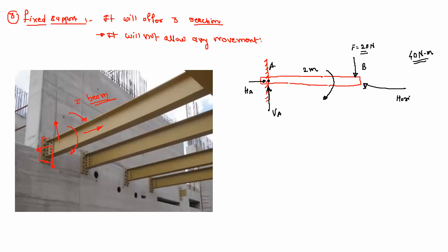The 20 N force tries to rotate beam AB clockwise about point A. To maintain equilibrium — keeping the beam exactly horizontal — there must be a counter moment in the anti-clockwise direction. This counter moment is provided by the fixed support. So the fixed support offers three reactions: HA, VA, and moment reaction MA.